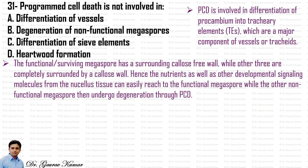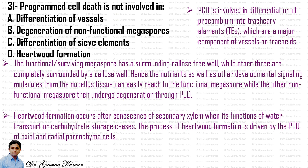The functional or surviving megaspore has a callose-free wall, while the other three are completely surrounded by a callose wall. Hence nutrients and developmental signal molecules from the nucellus tissue can easily reach the functional megaspore, while the other non-functional megaspores undergo degeneration through PCD. Also, heartwood formation occurs after senescence of secondary xylem when its function of water transport or carbohydrate storage ceases.